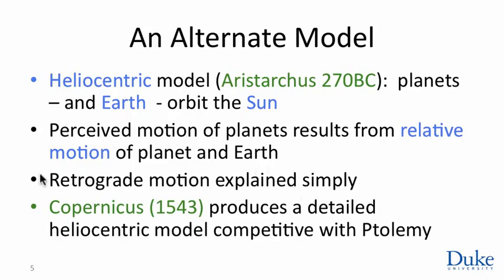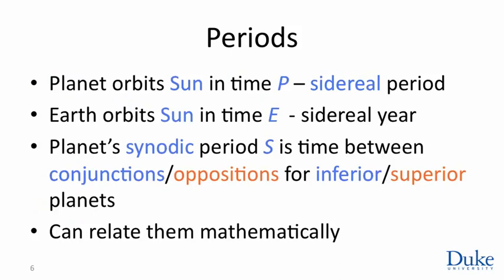This gives a nice simple explanation for retrograde motion. The model Aristarchus proposed was primitive and needed elaboration, and nobody paid it enough attention to bring it up to the required level of sophistication until Copernicus in the 16th century brought out a heliocentric model that was as detailed, predictive, and successful as the Ptolemaic model. The planets move along circles at uniform speed, and the non-uniform motion we see in the sky is explained by this aspect of relative motion.